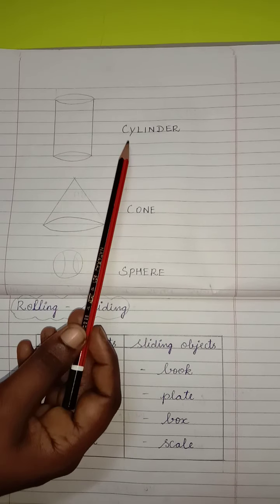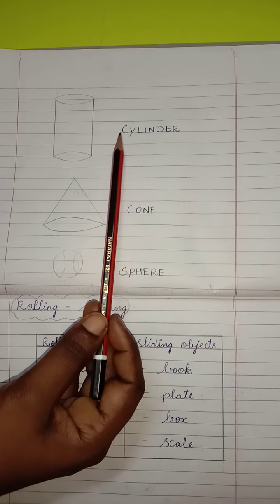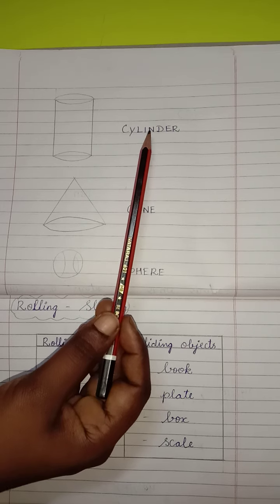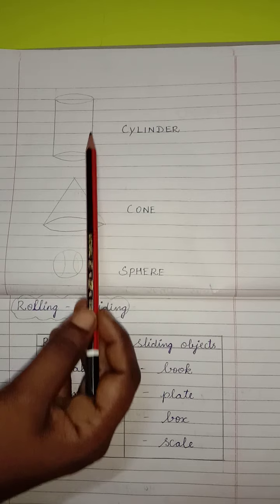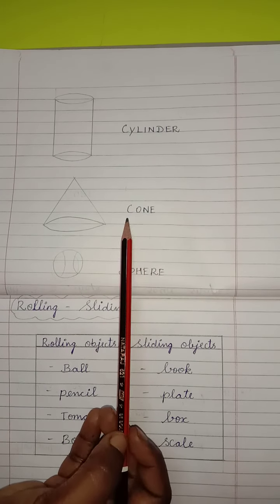This shape is cylinder. C-Y-L-I-N-D-E-R. Cylinder. Use a scale to draw the cylinder children. Then, come to next.